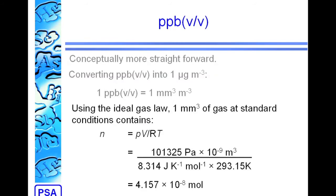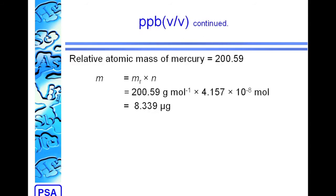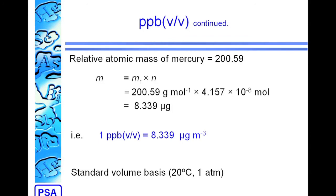We can then use the ideal gas law to work out what amount of gas is present in 1 cubic millimeter of gas, and that's shown on the screen. We can then use the relative atomic mass of mercury and that amount to work out what mass of mercury is present in the 1 cubic millimeter. And that comes out as 8.3 micrograms per cubic meter.